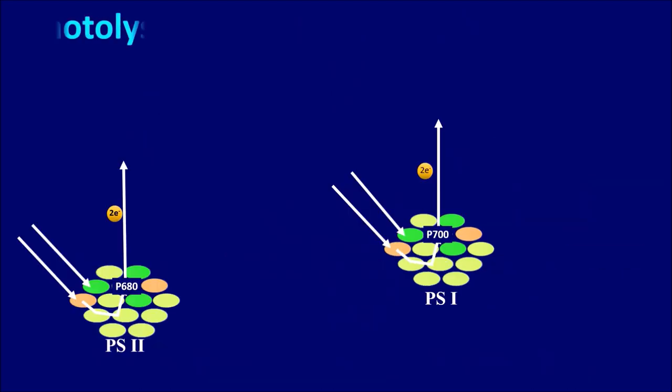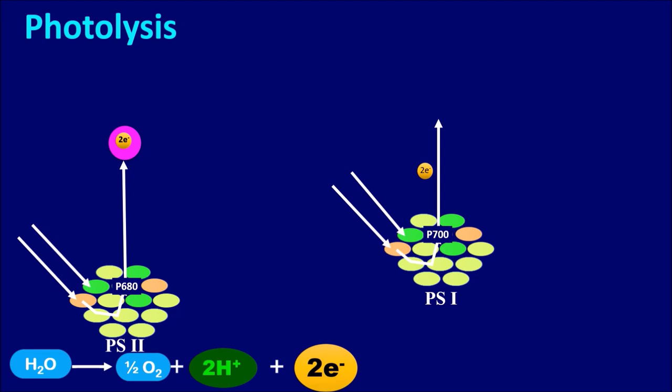Photolysis: When the electrons are excited from the chlorophyll, it will be received by electron acceptor such as pheophytin. This action stimulates the water molecule to split and form oxygen, protons and electrons. This process is known as photolysis. The resultant electrons move towards the reaction center to reduce it.